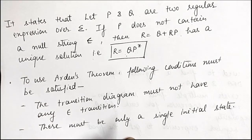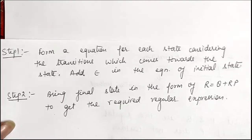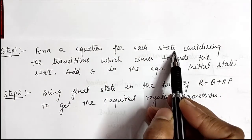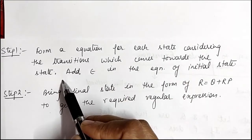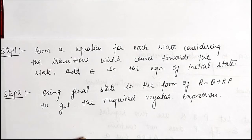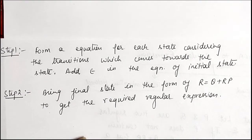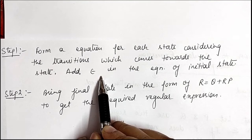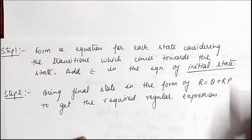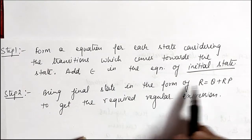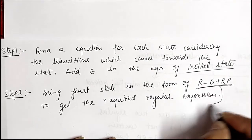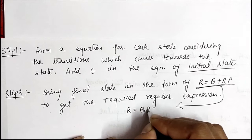There are two steps for Arden's method. Step 1: form an equation for each state by considering the transitions that come towards that state. We start with the initial state and check from which states we can reach a given state while reading any input. In step 1, we also add an epsilon transition in the equation of the initial state only. Step 2: bring the final state into the form r = q + rp to get the required regular expression, then directly convert it to r = qp*.